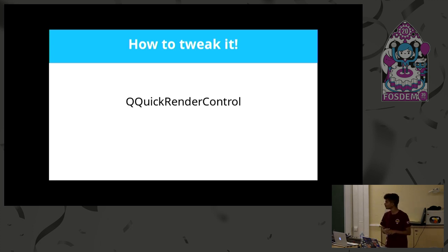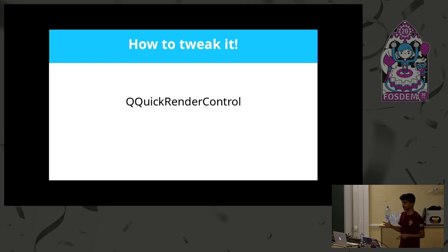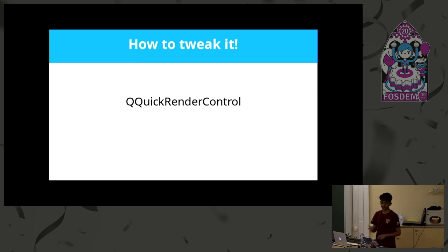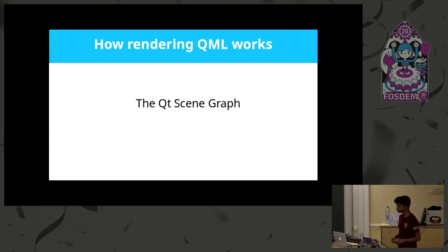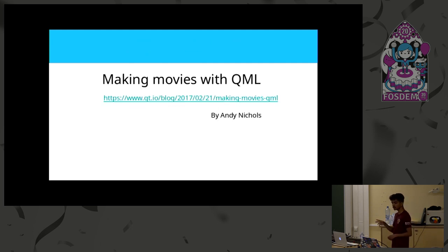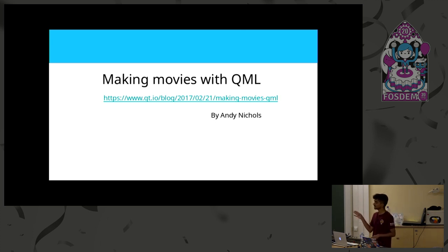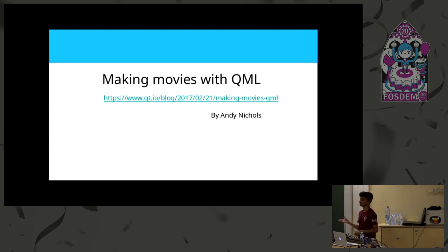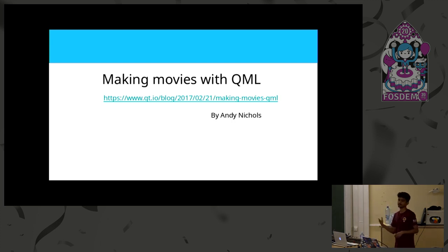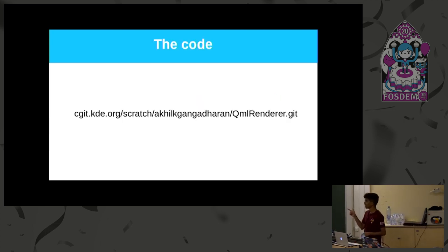The stuff I just talked about — we got this idea from a blog post by Andy on the Qt blog. You can look it up if you're into the technical details. Andy observed that people were using the Qt API in ways they weren't supposed to, and he sought out to make an example. The result is what I call the QML Renderer — a library. You can find the code there; I think it's production-ready.